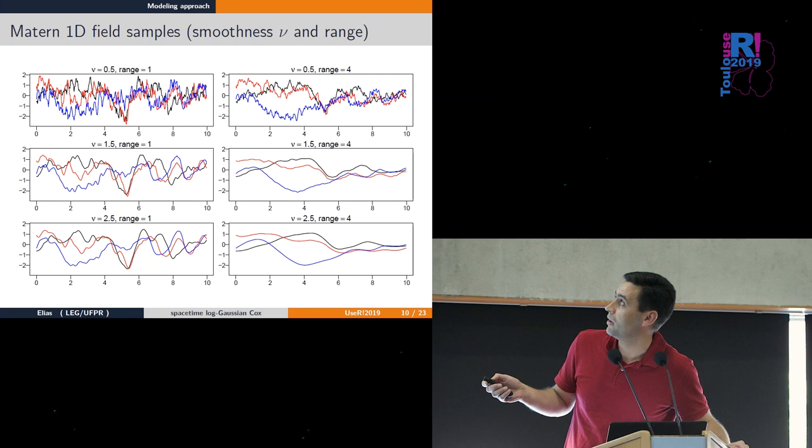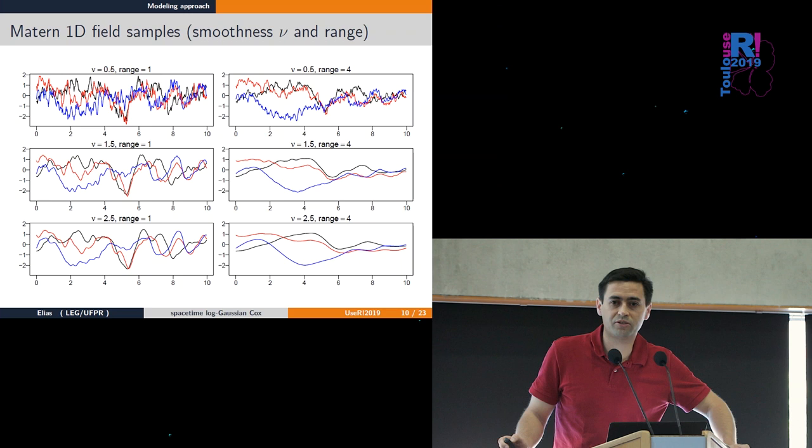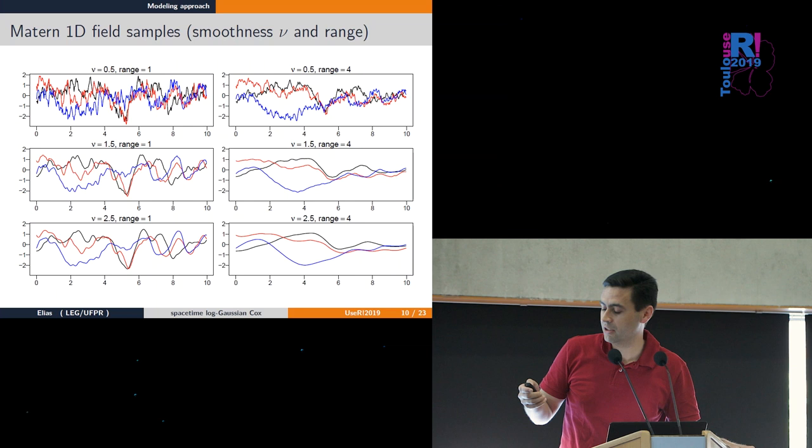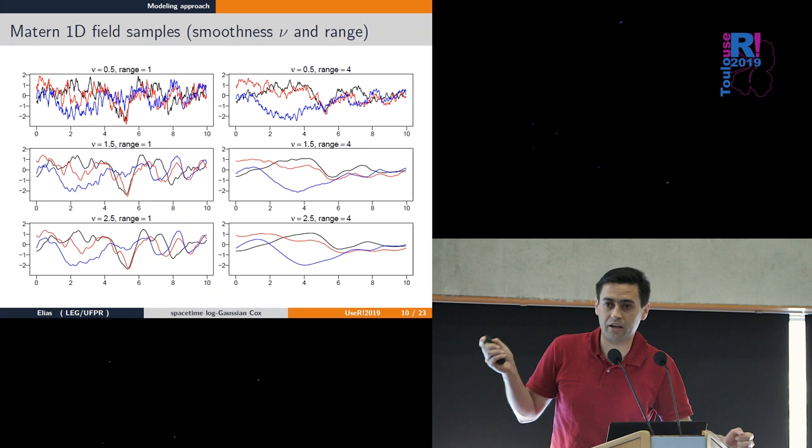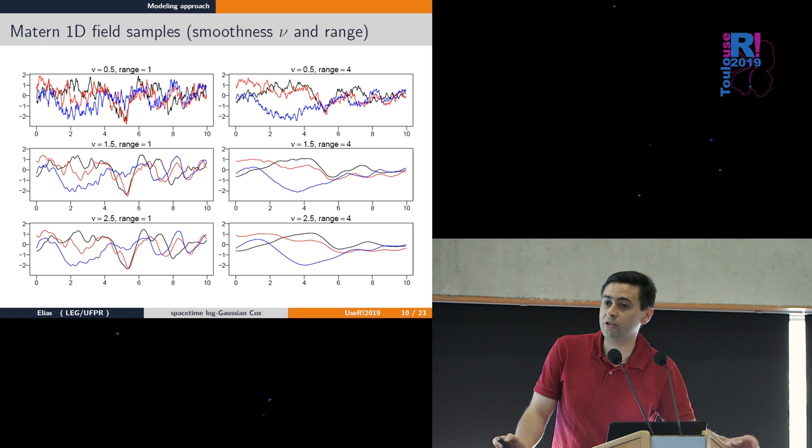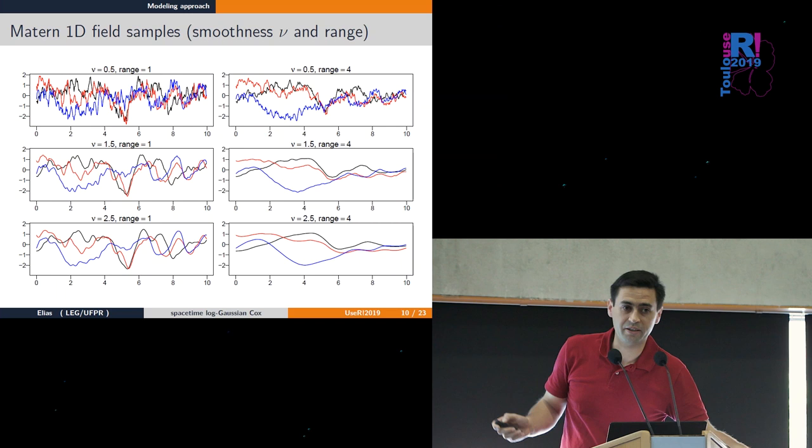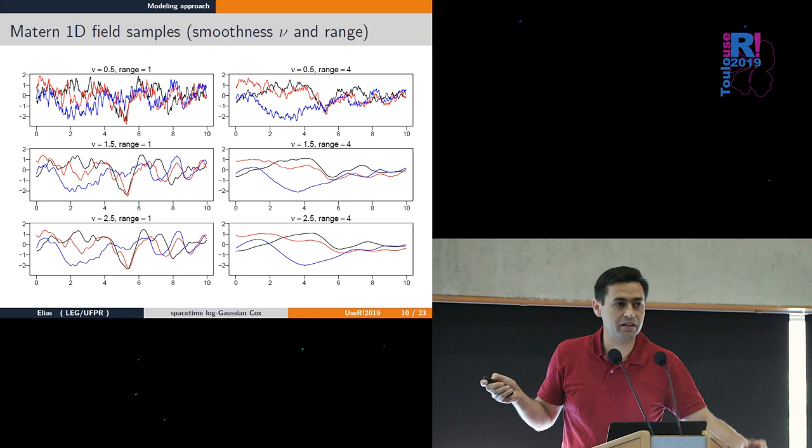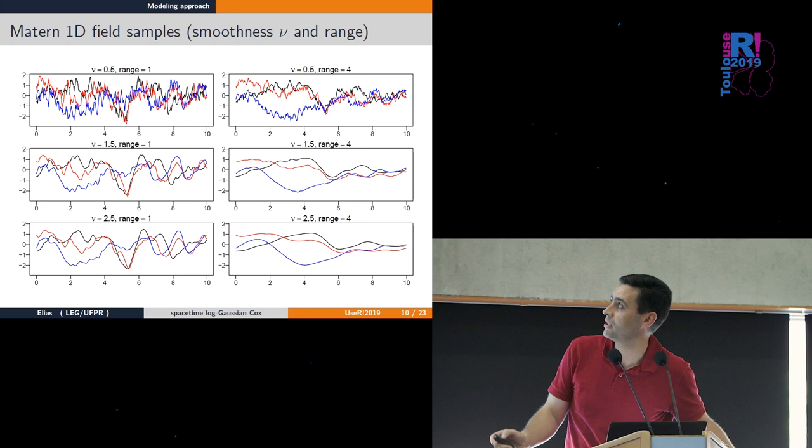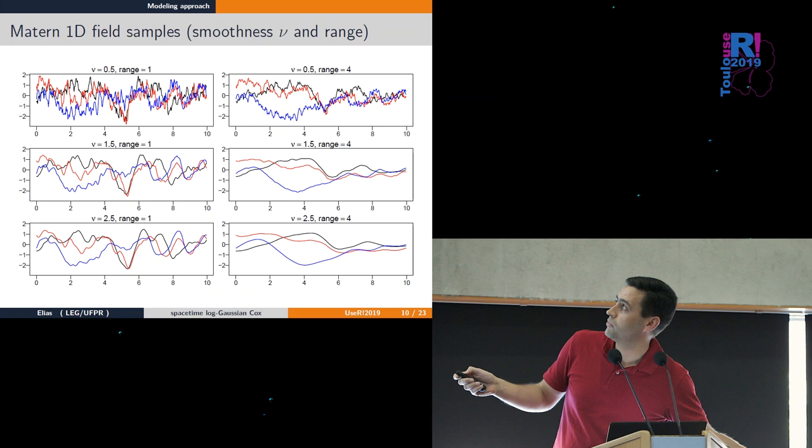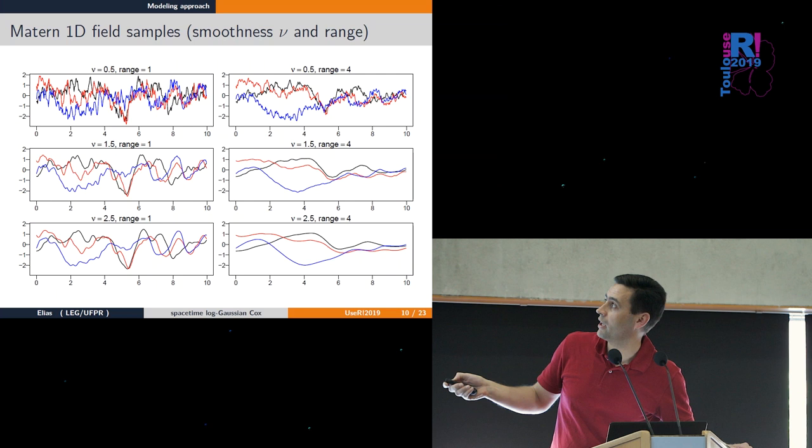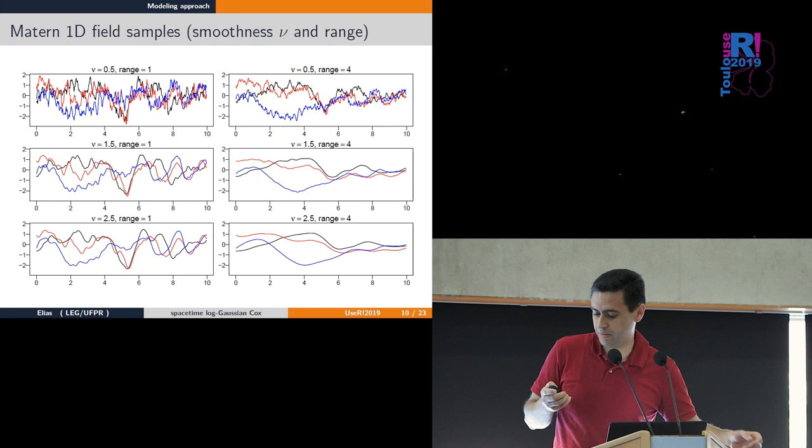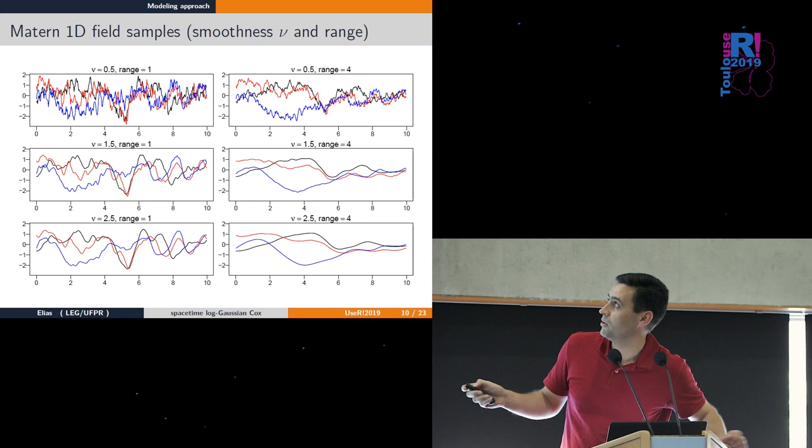Let's start with a Matérn 1D Gaussian process. This has three parameters: one is marginal variance (set as one in these graphs). The other two I'm showing here - the smoothness parameter gives less smooth processes which are noisy but still continuous (black, red, blue realizations), or more smooth processes. I have different kinds of processes under this Matérn field.